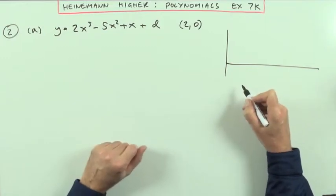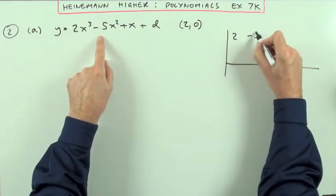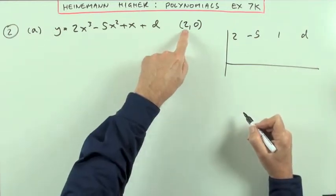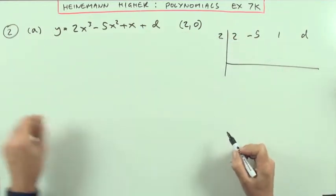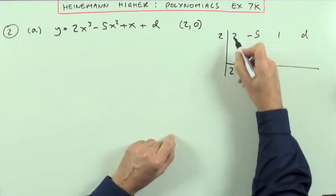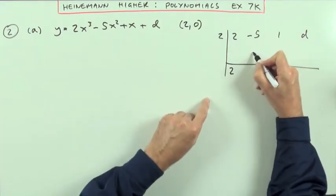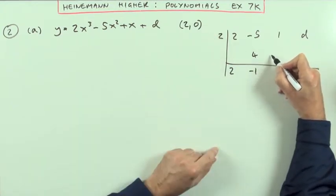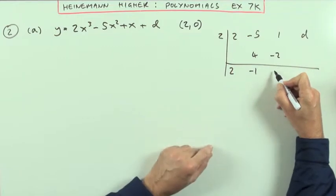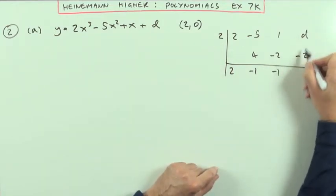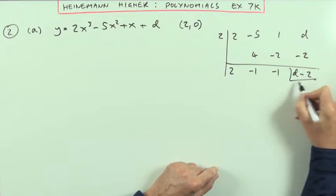Well straight away we'll do this. Put down my synthetic division with these coefficients: 2, negative 5, 1, and d. I know that 2 is a root, so that x minus 2 is a factor, the remainder should come to 0. Just working it through: 2, multiply it up, 4, add it down, negative 1, multiply it up, negative 2, add it down, negative 1, again, multiply it up, negative 2, add it down, and I've got d minus 2.